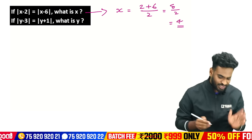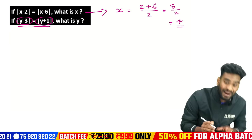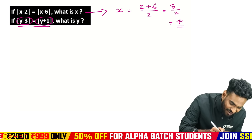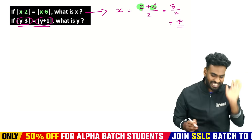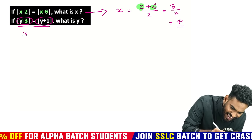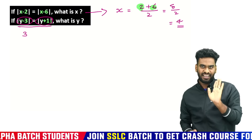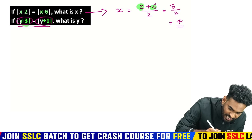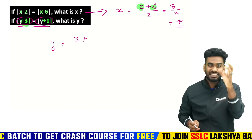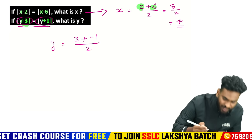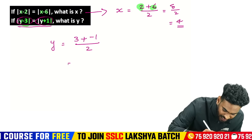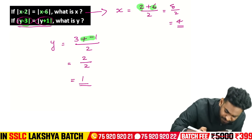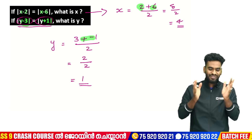Midpoint equals 2. Now the next part: mod of Y minus 3 equals mod of Y plus 1. Y plus 1 equals 2 minus sign. If there is a minus sign, we write the positive value. So 3 equals 3 plus 1 with a minus sign applied. The result is: 3 minus 1 equals 2, divided by 2 equals 1. So the value of Y is 1 and the value of X is 4.